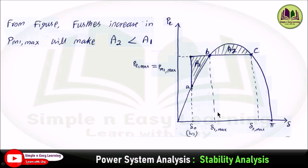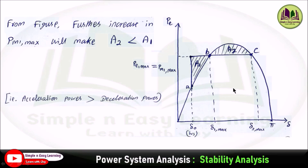Further increase in Pm1_max leads to an increase in area 1 and a decrease in area 2, so area A2 becomes less than area A1. This leads to instability, as the accelerating power exceeds the decelerating power.